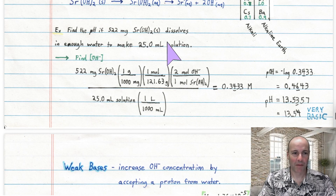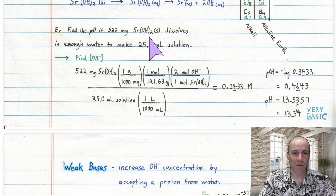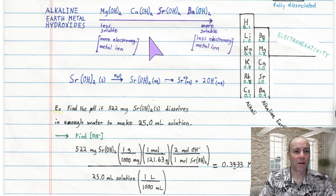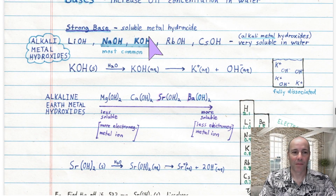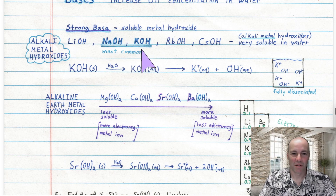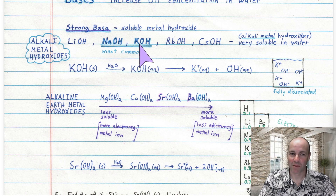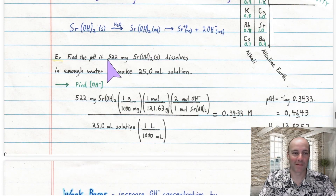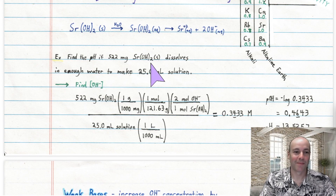That was an example of a tough problem for a strong base. Usually strong bases are going to be sodium and potassium, and those are simpler because they only give you one hydroxide per formula unit. I decided to give you a tough problem so I don't cheat you. Anyway, that's a strong base — now let's do a weak base.